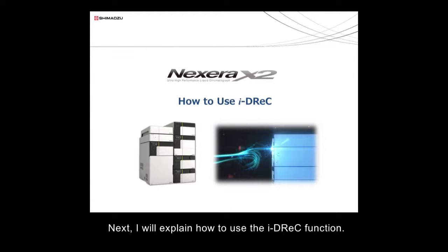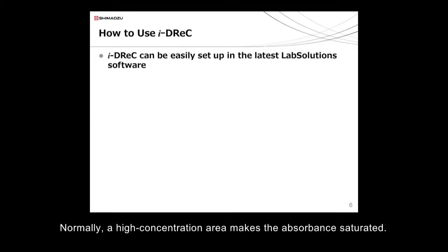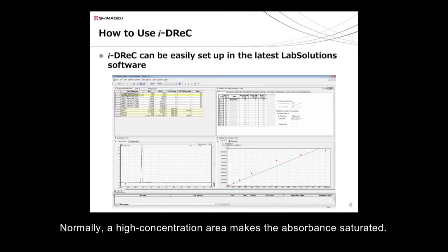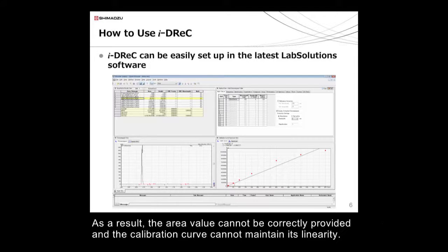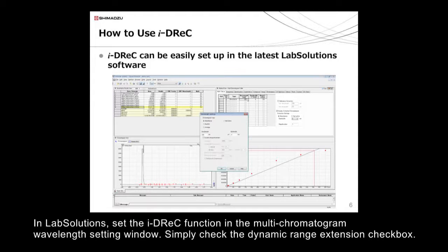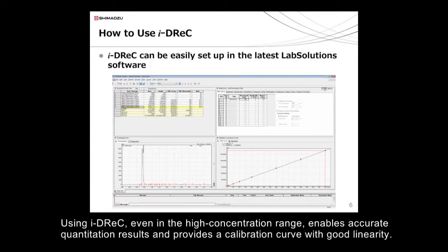Next, I'll explain how to use the iDREC function. Normally, a high concentration area makes the absorbance saturated. As a result, the area value cannot be correctly provided, and the calibration curve cannot maintain its linearity. In LabSolutions, set the iDREC function in the multi-chromatogram wavelength setting window. Simply check the dynamic range extension checkbox. Using iDREC, even in the high concentration range, enables accurate quantitation results and provides a calibration curve with good linearity.